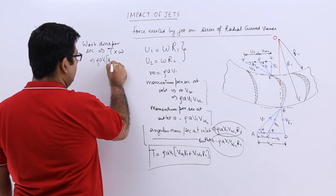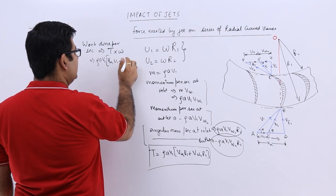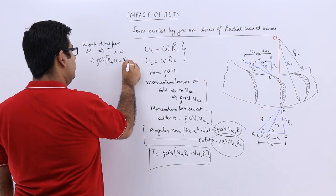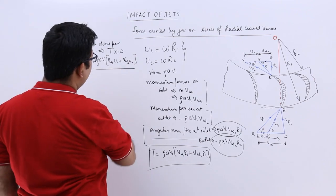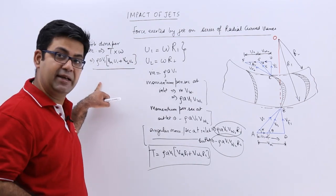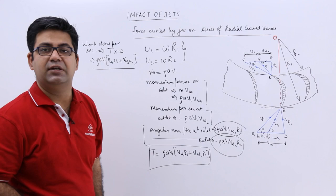We will have vw1u1 plus vw2u2. This is the work done per second by the jet on these curved vanes.